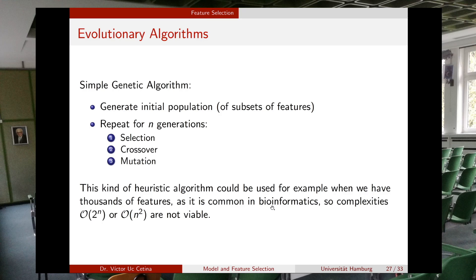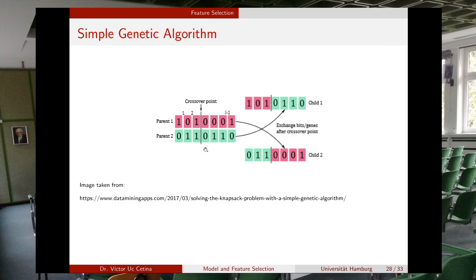For example, a red vector could represent a subset of features: the first feature is included (1), the second is not (0), the third is included (1), and the seventh is also included (1). Another solution might be 0,1,1,0,1,1,0, representing features two, three, five, and six. Initially you generate several such vectors randomly, and the genetic algorithm discovers which features are good to include.